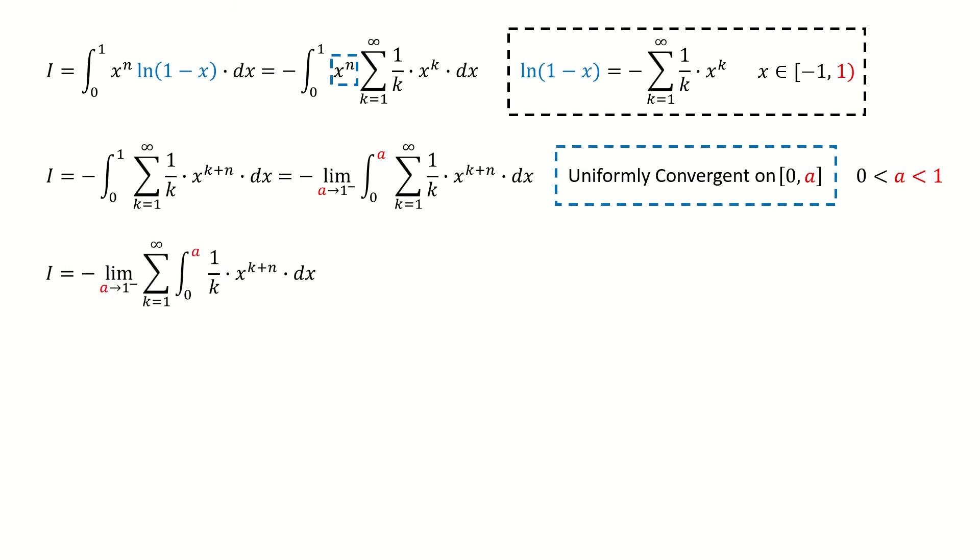So we got here, and then we take the 1 over k out of the integral. This integral is simple, so we just integrate it. We plug in the lower and upper limit.